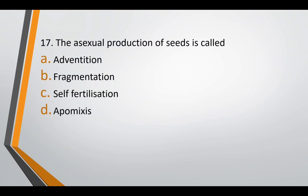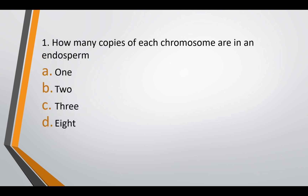Question seventeen: asexual production of seeds is called — adventition, fragmentation, self-fertilization, or apomixis. The correct answer is option D — apomixis. Question eighteen: how many copies of each chromosome are there in an endosperm — one, two, three, or eight? The correct answer is option C — there are three copies.